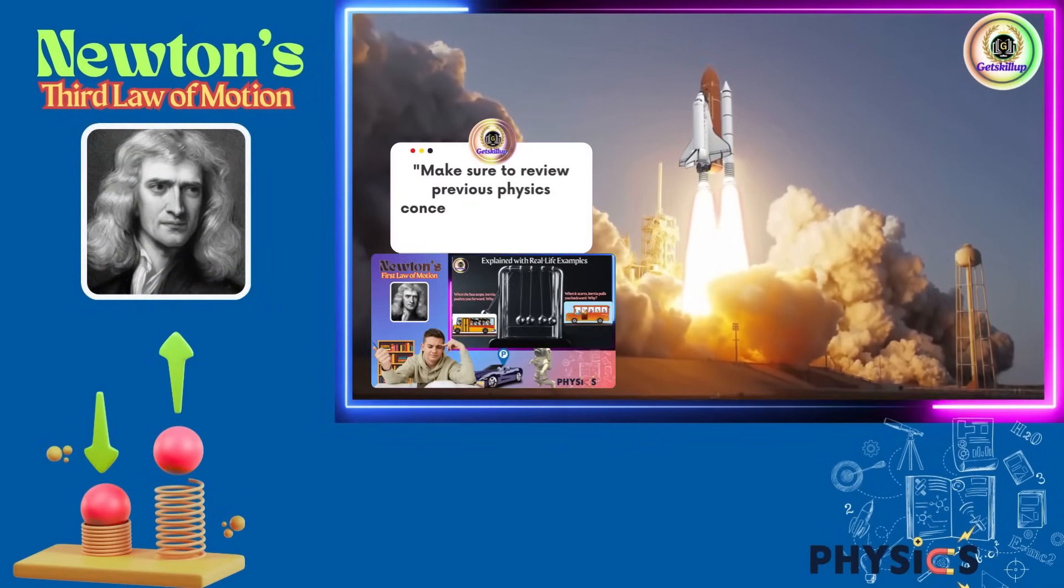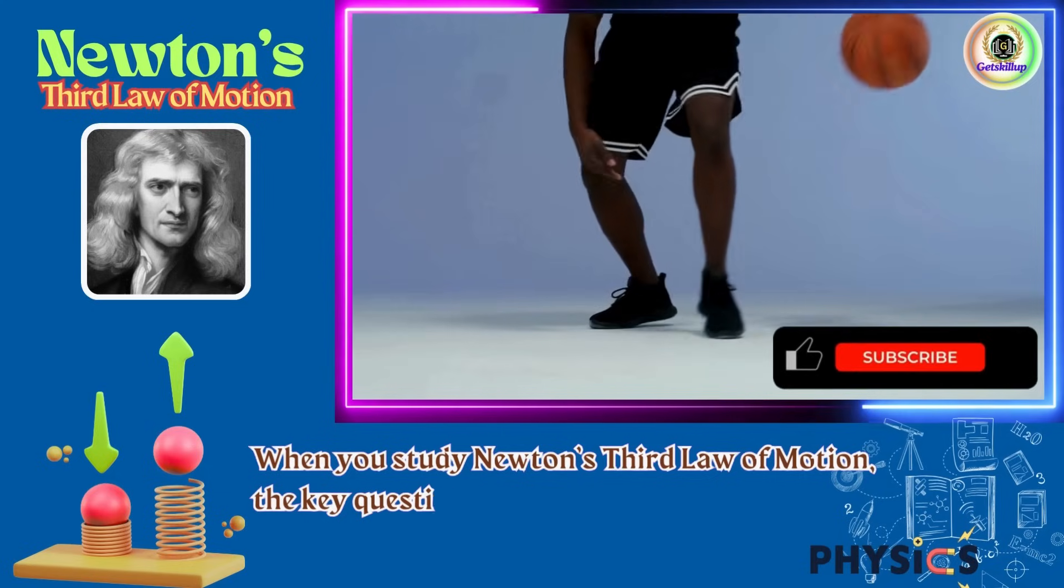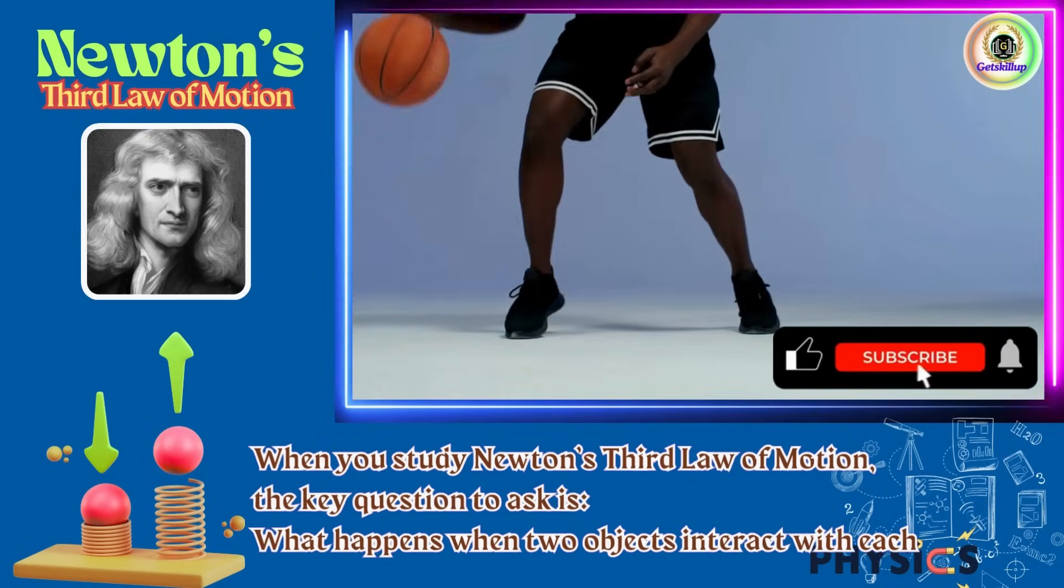Newton's third law of motion explained with examples. When you study Newton's third law of motion, the key question to ask is, what happens when two objects interact with each other?